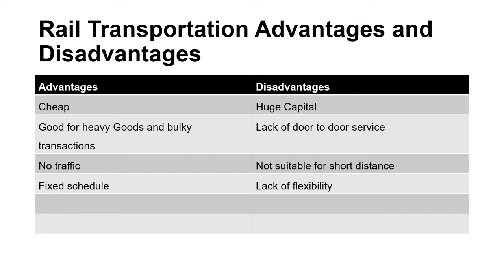Disadvantages of rail transportation: the government needs a lot of money to implement the system, so it requires huge capital. You cannot deliver goods door to door — there is a lack of door-to-door service. It is not suitable for short distances; road transportation is better for that. There is also a lack of flexibility because of the fixed schedule — we have to work based on the rail transportation schedule and can't change it based on our requirements.